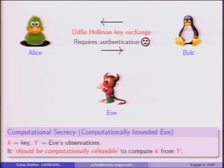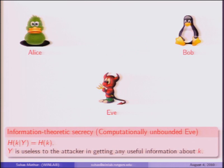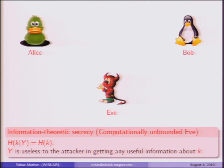There is another notion of secrecy called information-theoretic secrecy, also called unconditional secrecy, where Eve does not need to be computationally bounded. The observations Y available to Eve are completely useless to her in trying to derive the key K. This can be formalized mathematically by saying that the entropy of K given the observations Y equals the uncertainty of K—so there is no loss in uncertainty: H(K|Y) = H(K).